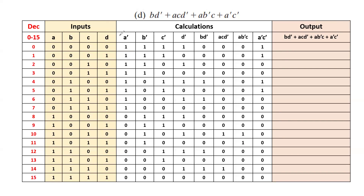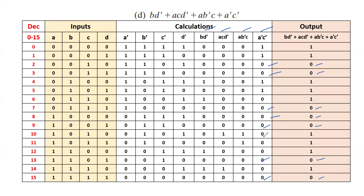Next we find A'C' — concentrating only on A' and C'. When both inputs are 1, the output is 1. In these two combinations we have both 1s so the output is 1; the remaining all cases have at least one single 0 so the output is 0. Now we find the final output — that is OR of all these product terms. When all product values are 0 the output is 0, otherwise 1. In these cases we have all values as 0s, so the output is 0. In the remaining cases at least one single 1 is present among the products so the output is 1.